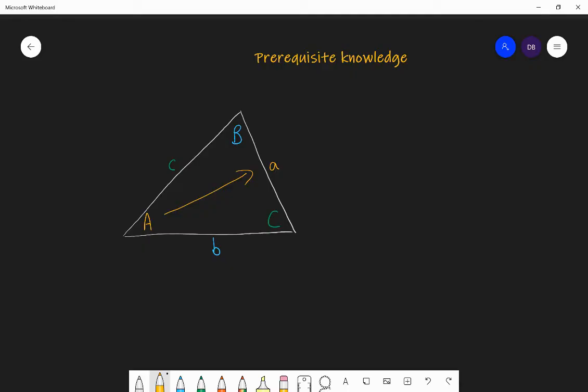And then if we label them like that, the following things hold true. Firstly, that side length a divided by the sine of angle A is equivalent to side length b divided by the sine of angle B. And that's also equivalent to side length c divided by the sine of angle C. And that formula there is called the sine rule. Usually it's only used in two parts. When you're actually trying to solve something, we create an equation with two parts.